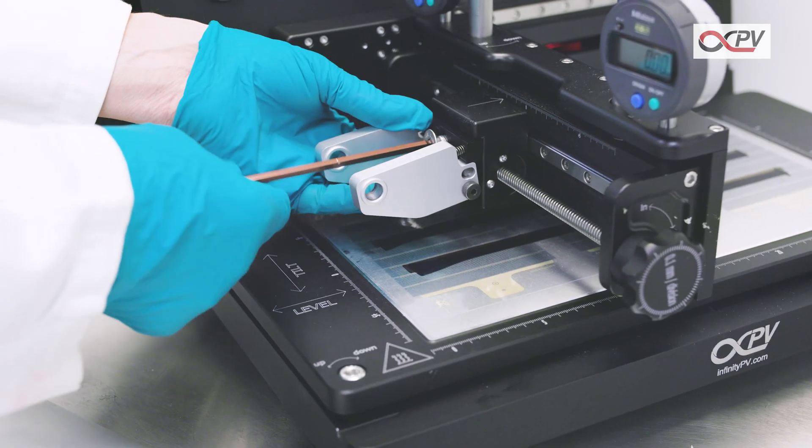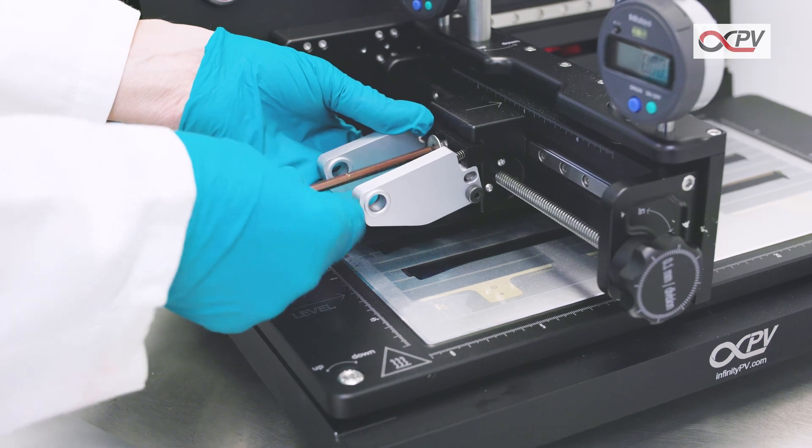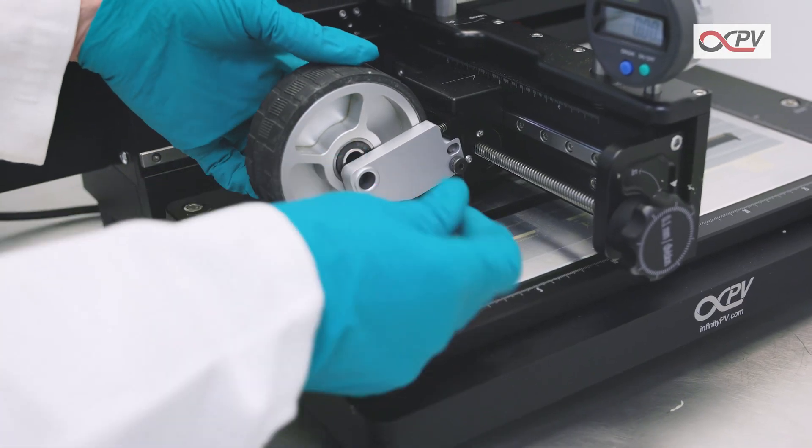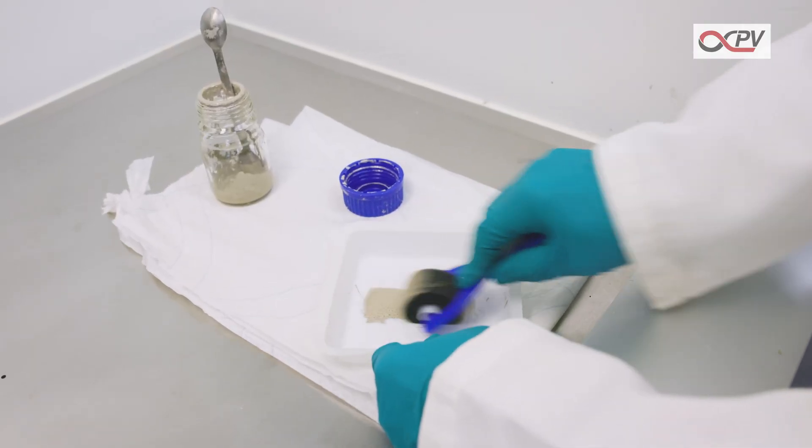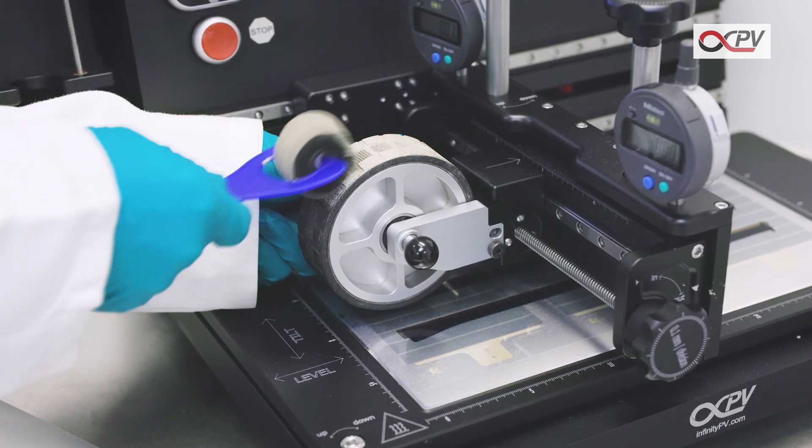Start by attaching the Flexo Roller and aligning it with the pattern on the substrate. Using a small paint roller, transfer the silver paste to the printing roller.